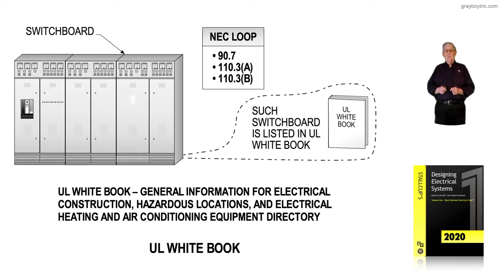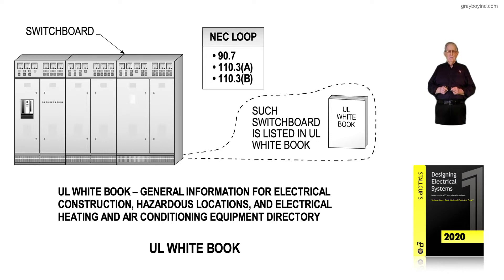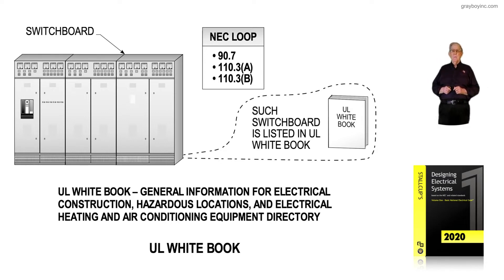This illustration deals with the UL White Book. In times past, UL issued a UL White Book entitled General Information for Electrical Construction, Hazardous Locations, and Electrical Heating and Air Conditioning Equipment Directory. They do not issue the standard anymore as the UL White Book — it's electronic only.